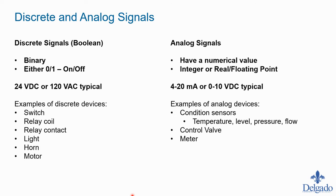Our typical control voltages, at least in the United States, are either 24V DC or 120V AC. Input cards can be either 24V DC or 120V AC, though there are others such as 240V AC or 48V DC. Common examples of discrete devices include switches, relay coils, relay contacts, lights, horns, and motors — things that are either on or off with no in-between state.